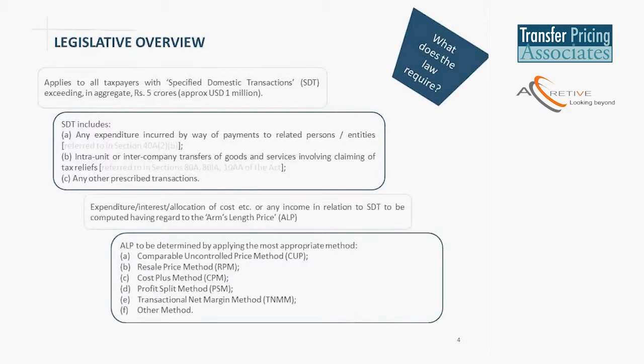The specified domestic transactions, whether it is an expenditure or an income, would be affected by the regulations. For units which do not have any sort of tax relief claim and are only covered by domestic transfer pricing in relation to their payment transactions, the focus will be on the value of the expense which has been incurred in payments to related entities. The regulations in terms of how to determine the arm's length price are very similar to what has been provided for international transactions, and they require the arm's length price to be determined by one of the six methods.